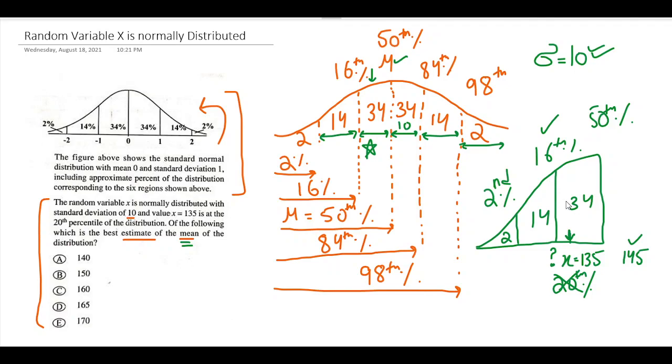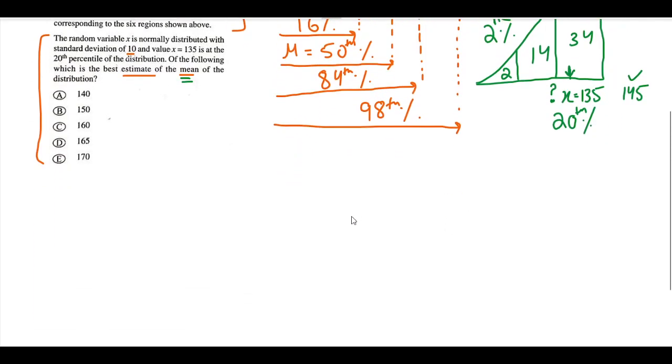But the question has not given us this 135 value at the 16th percentile. What it has given is a value which is a little to the right of 16. So let's think about this. Let's scroll down a little bit. Let's make it even more understandable.